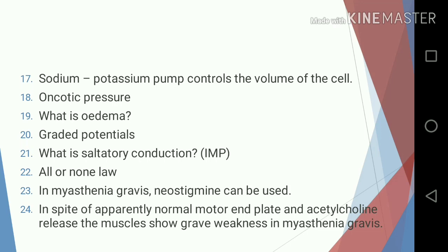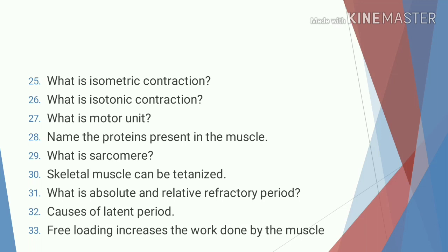Twenty-three, in myasthenia gravis neostigmine can be used; twenty-four, in spite of apparently normal motor end plate and acetylcholine release, the muscles show grave weakness in myasthenia gravis; twenty-five, what is isometric contraction; twenty-six, what is isotonic contraction; twenty-seven, what is motor unit; twenty-eight, name the proteins present in the muscle; twenty-nine, what is sarcomia; thirty, skeletal muscle can be tetanized.